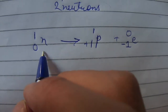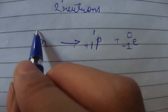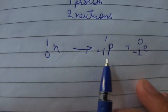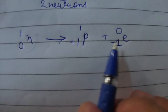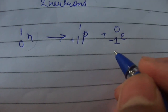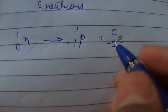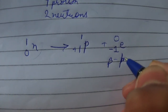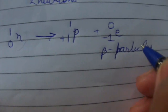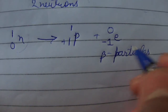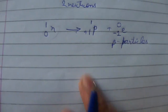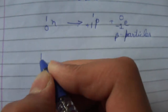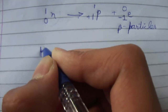Neutrons are present in the nucleus of the atom, so one neutron is converted into one proton and one electron. Since electrons are not stable in the nucleus, they are emitted from the nucleus — this is called beta emission. These emitted electrons are called beta particles.